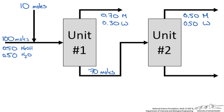Here is our schematic with our known variables for the flow rates and compositions. Now we should label our unknowns. The first stream entering the system has a flow rate and composition — we are good there. Our second stream has a composition and flow rate, totally labeled. But the stream entering unit 1 does not have a flow rate, so we will call that N1, and its composition is unknown so we will call that Y1M for methanol. Since it is just methanol and water, the mole fractions add up to 1, so we leave off the water mole fraction.